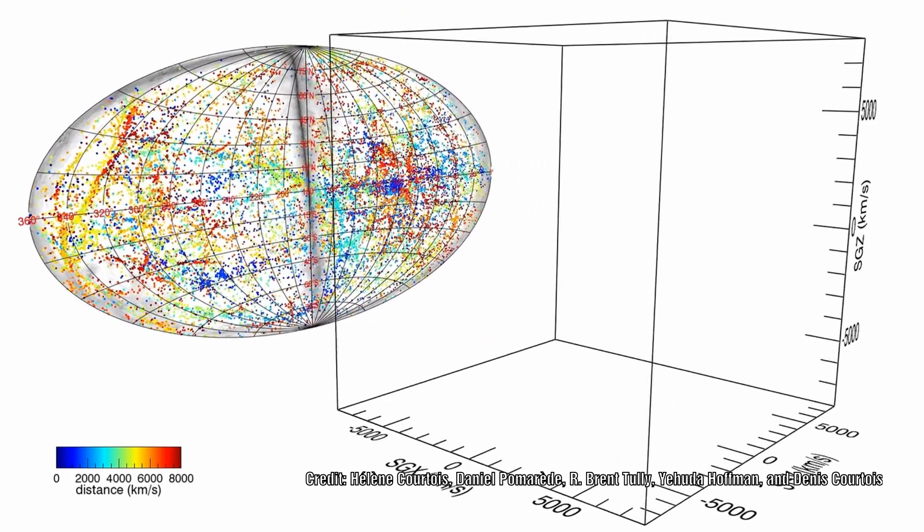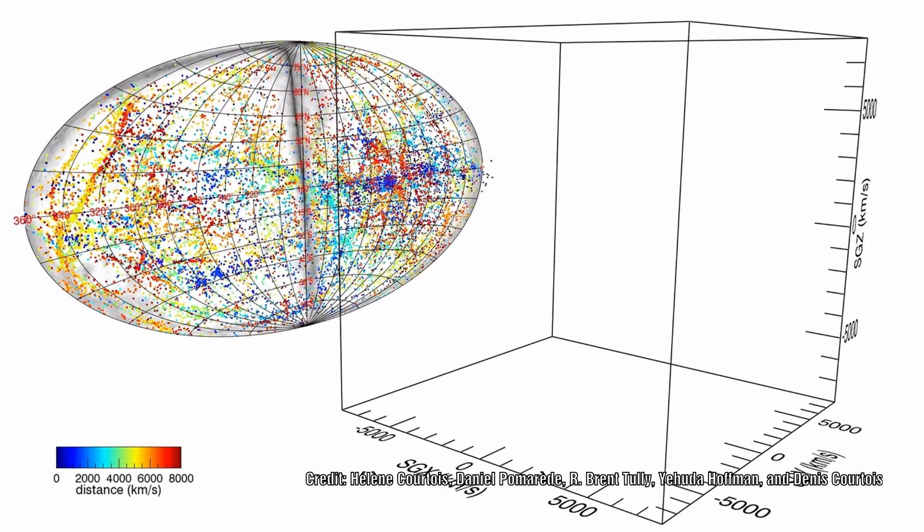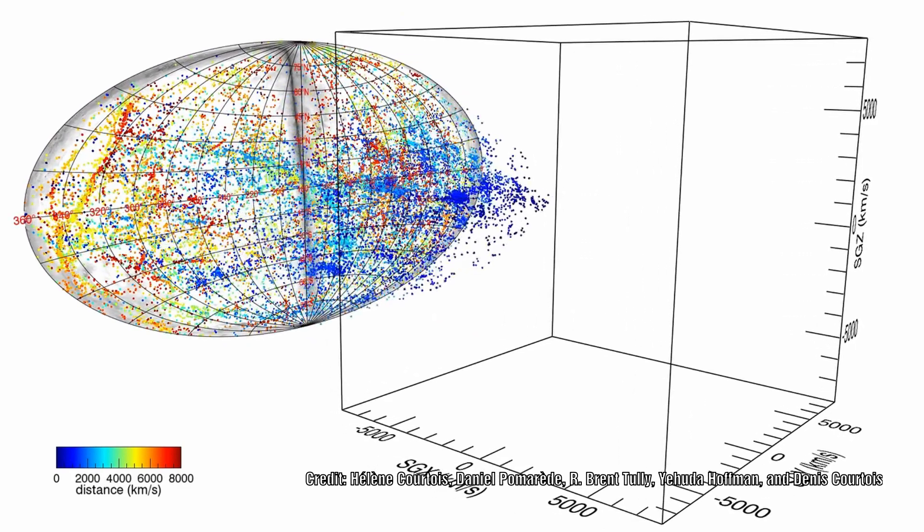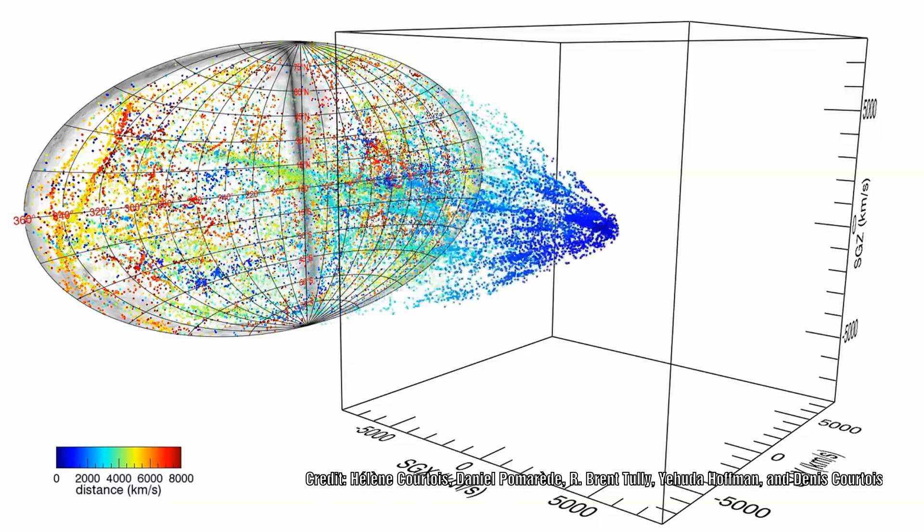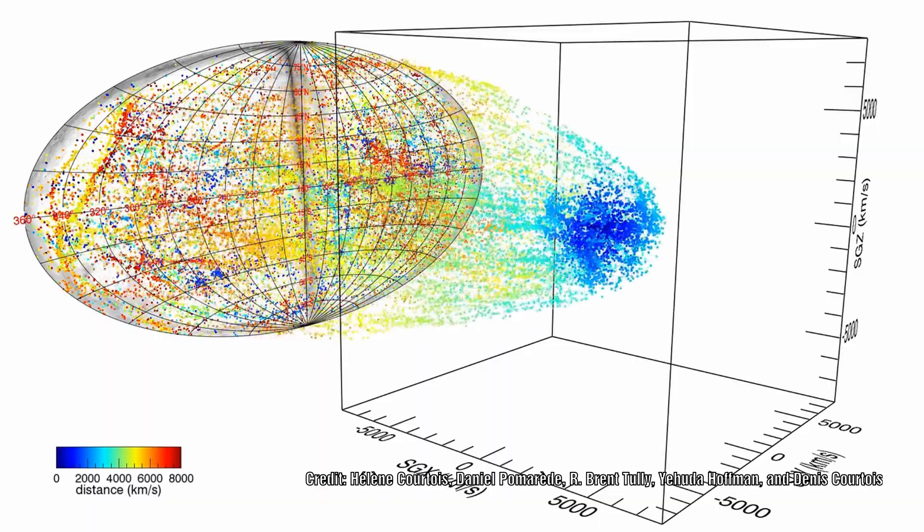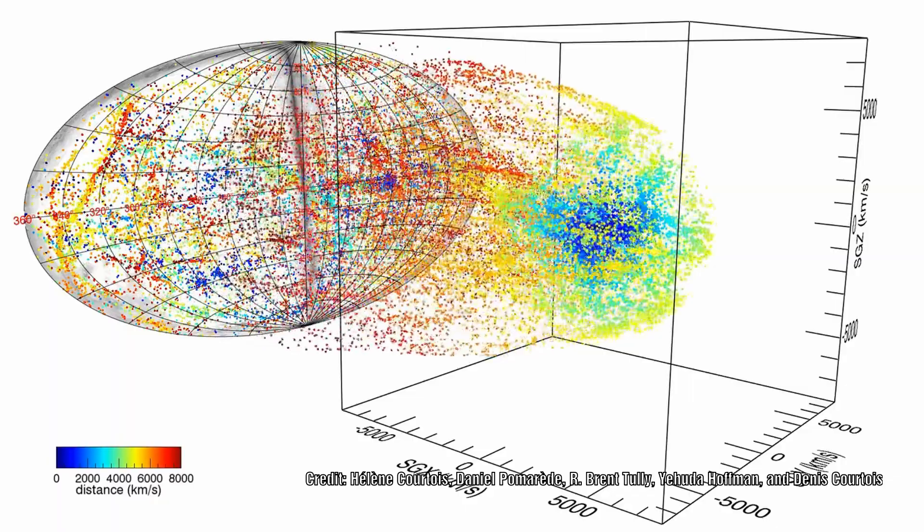Using the motion of 18,000 galaxies, they developed a map to show the boundary between where matter is present and where it is absent, and thereby outlining the local void.